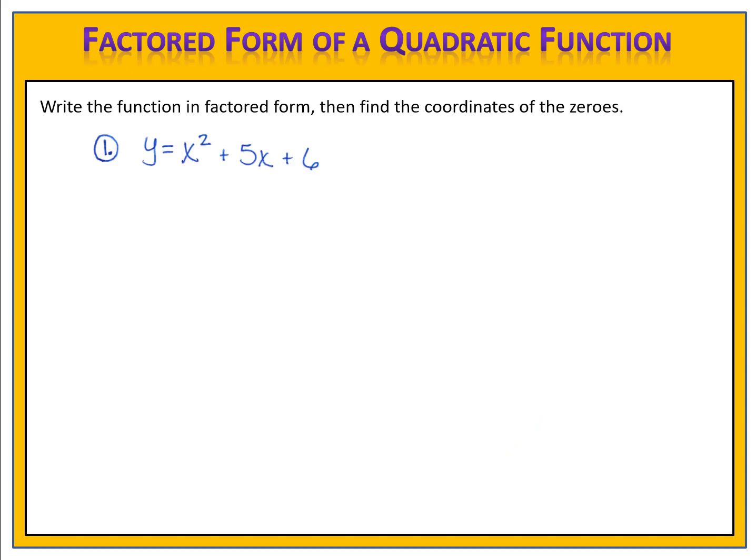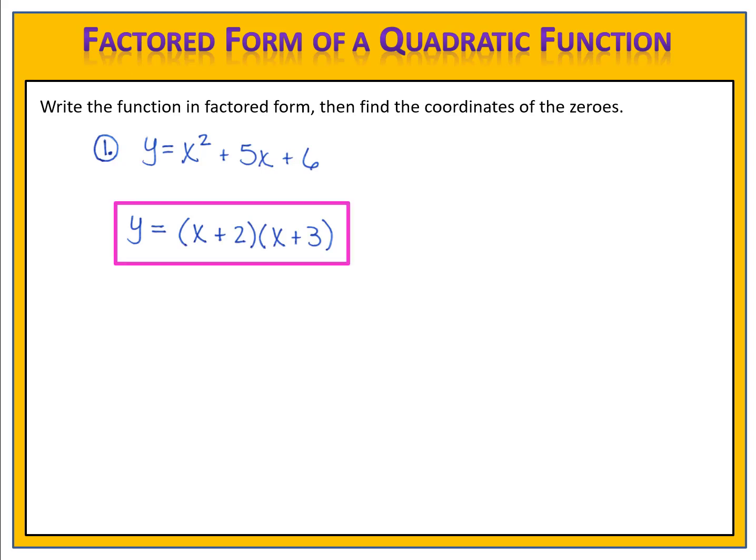In our first example, we have the function y equals x squared plus 5x plus 6. We want to do two things: first, write the function in factored form, and then second, find the coordinates of the zeros or x-intercepts. We begin by factoring x squared plus 5x plus 6. When we factor, we come up with two binomials: x plus 2 times x plus 3. This is the function in factored form.